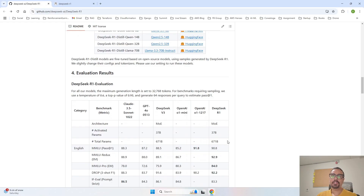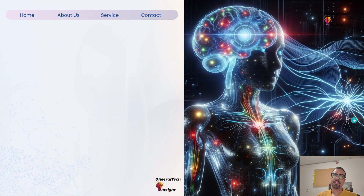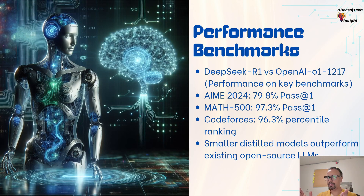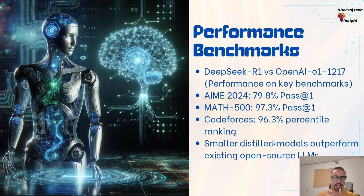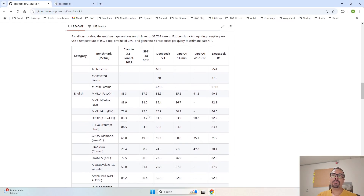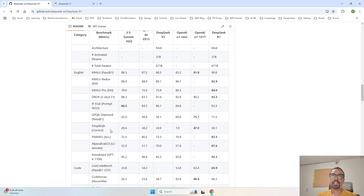Now let's talk about performance benchmarks and compare DeepSeek R1 versus OpenAI O1. We have different benchmark scores: AIME at 79.8% and MATH 500 and Codeforces at 96.3%, which is better than OpenAI O1. To make it simple: AIME stands for AI Model Evaluation — a benchmark used to evaluate AI model performance in reasoning and problem-solving tasks, testing the model's ability to handle complex scenarios and achieve high accuracy. The benchmarks are shown across categories including coding, math, English, and Chinese. MATH 500 is a benchmark specifically designed to test a model's mathematical reasoning capability.